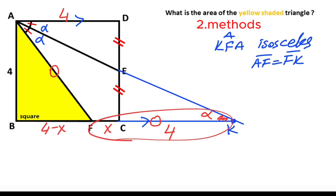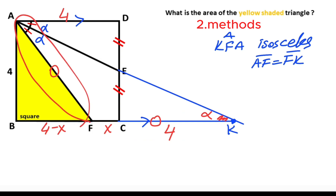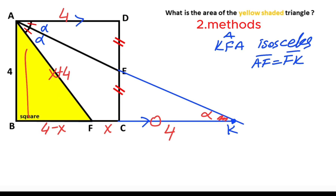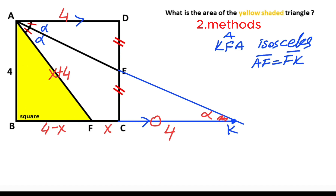After that, if this is x plus 4, then this side length must also equal x plus 4. Therefore, applying the Pythagorean theorem for this triangle: (4 minus x) squared plus 4 squared equals (x plus 4) whole squared.